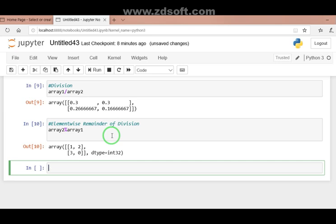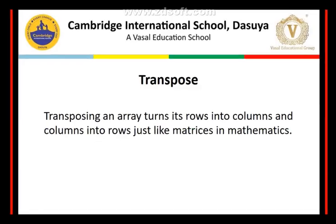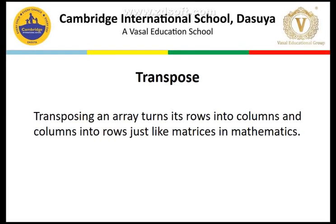Now moving to the next operation: how to calculate the transpose. Coming back to the slides — transpose is a very important matrix operation. Transposing an array turns its rows into columns and columns into rows, just like in matrix mathematics. This is the conversion of rows into columns and columns into rows.